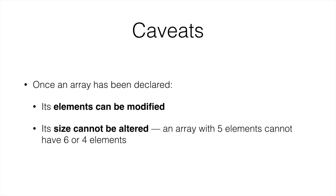So this is one of the caveats that arrays have. Once an array has been declared, its elements can be modified, but its size cannot be changed. So an array with three elements, or five elements, cannot have six or four elements for example. So you cannot change the number of elements that are in an array after you have created the array.